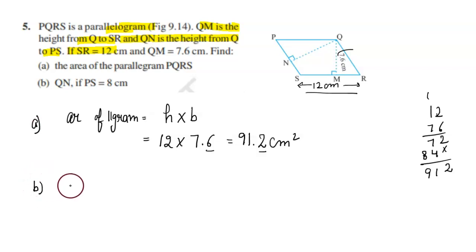Second, QN: if PS is given which is 8 cm, find QN. What is QN? It's the altitude or height.